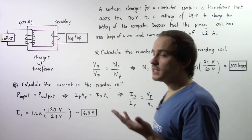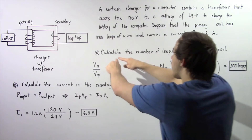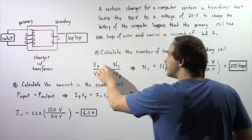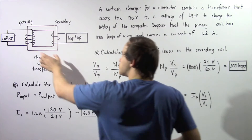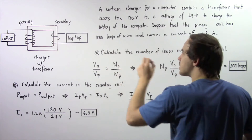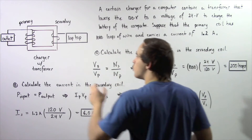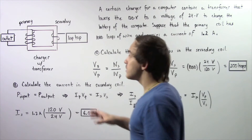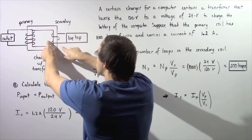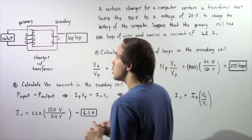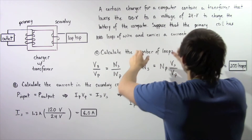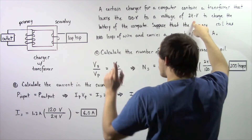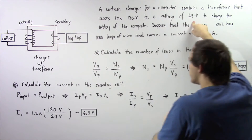Let's begin with part A. In the previous lecture, we derived the transformer's equation: the voltage at the secondary coil divided by the voltage at the primary coil equals the number of loops in the secondary divided by the number of loops in the primary. Notice this is a step-down transformer — the number of loops in the primary is greater than in the secondary, so the voltage decreases from 120 to 24 volts. Let's rearrange the equation and solve for Ns.